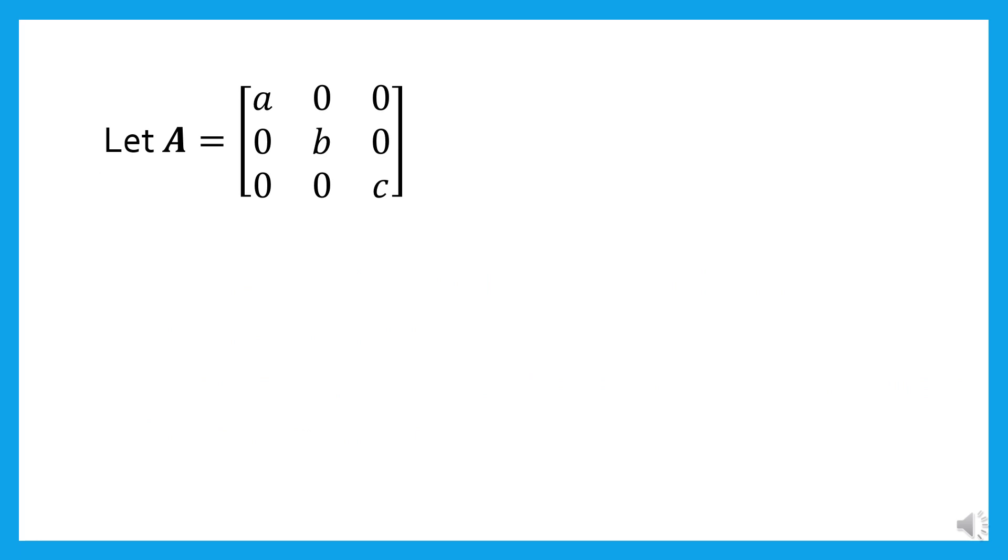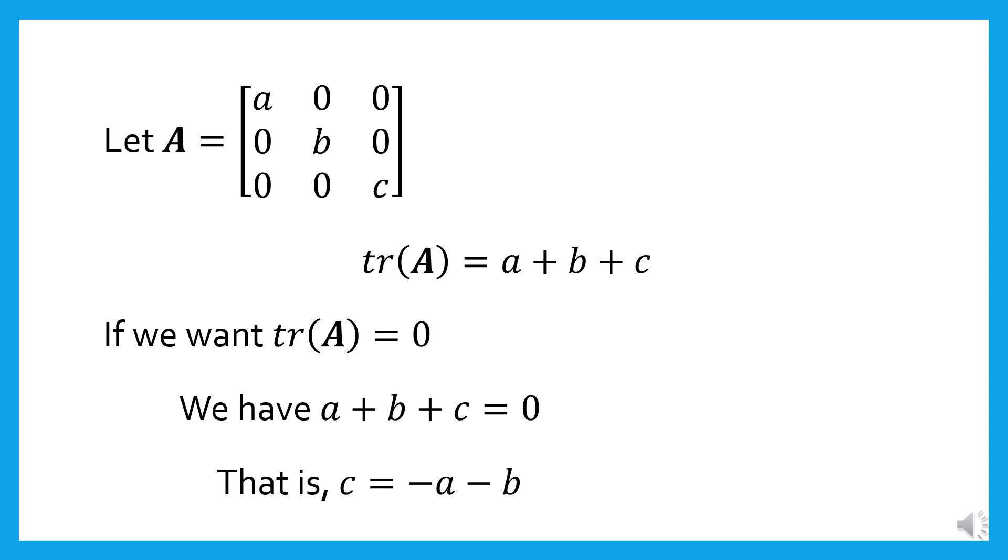Let matrix A, trace of A equals a plus b plus c. If we want trace of A equal to zero, we have a plus b plus c equal to zero. That is, c equals minus a minus b.